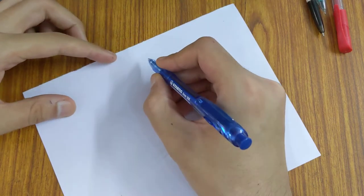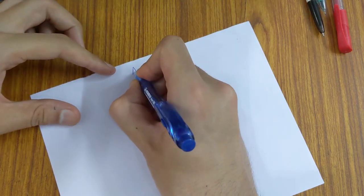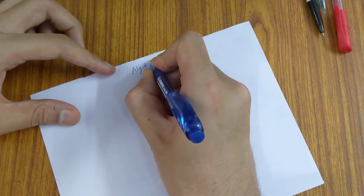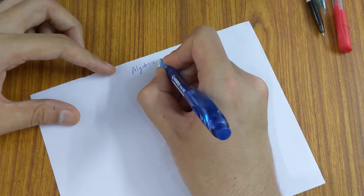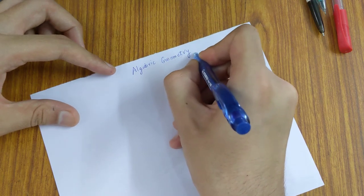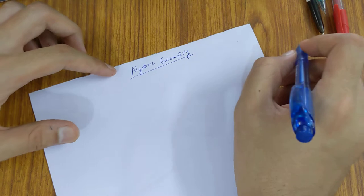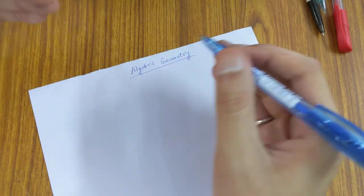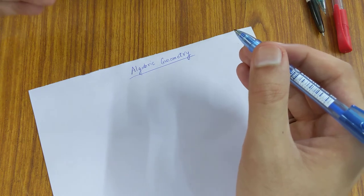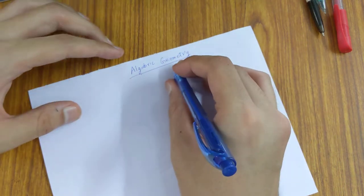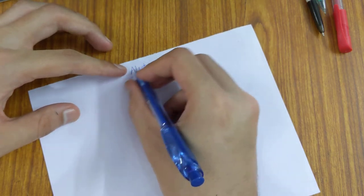Hello friends, today we'll be looking into the concept of algebraic geometry. Algebraic geometry is the field of geometry in which we can denote geometrical figures in the form of